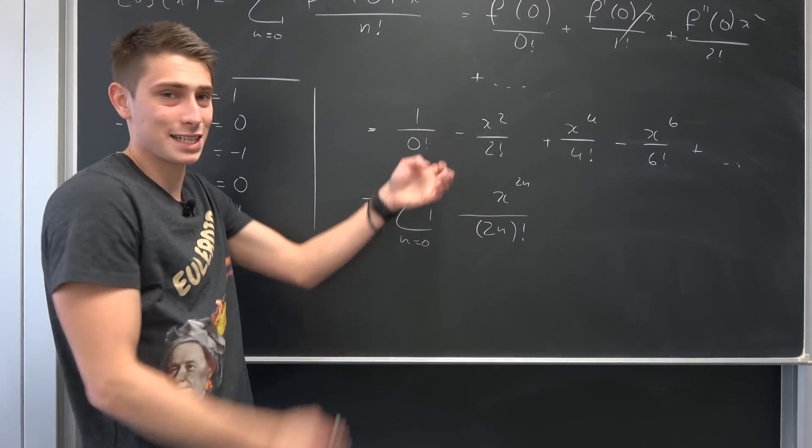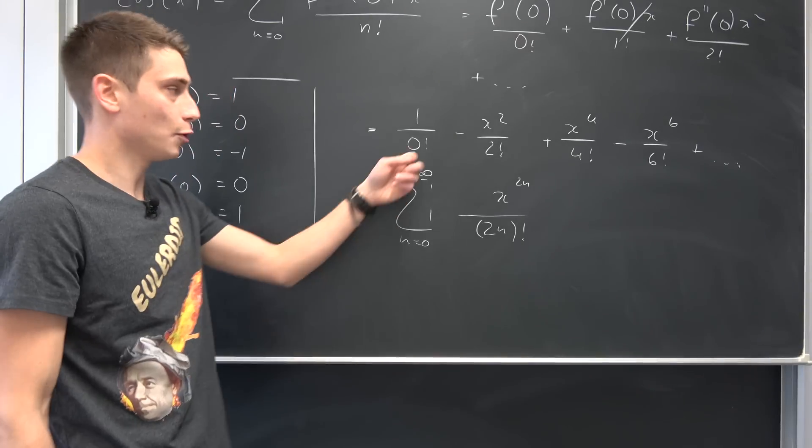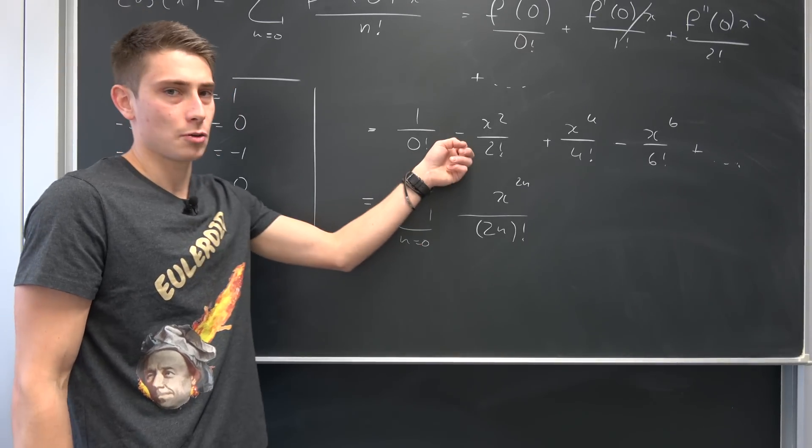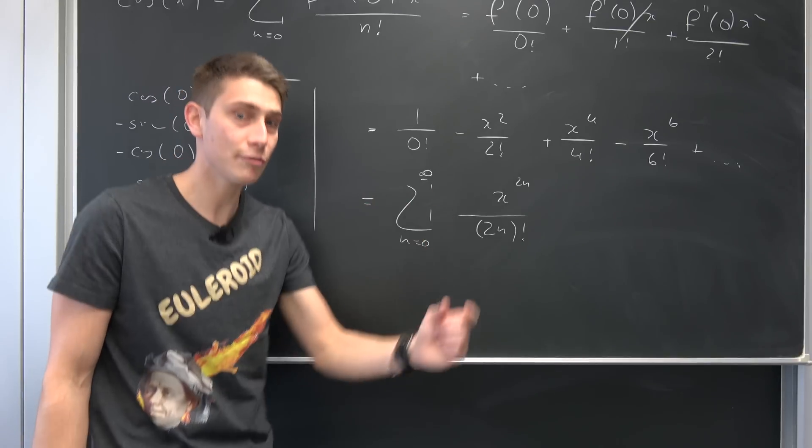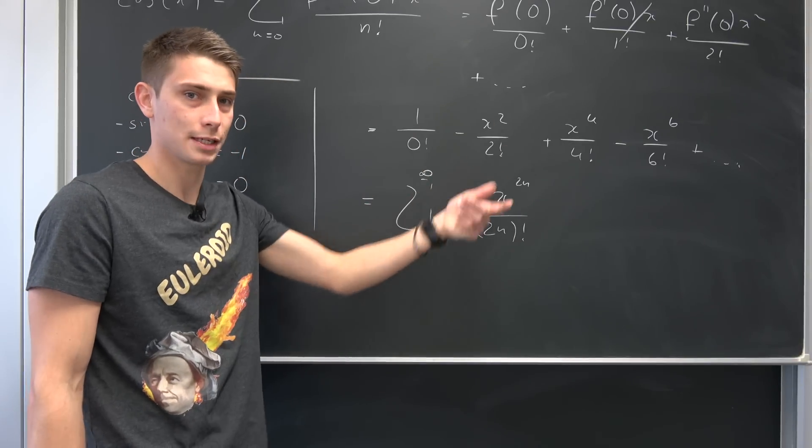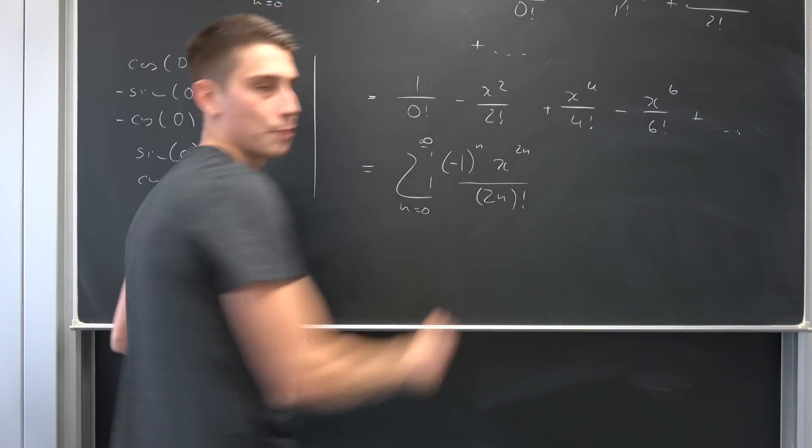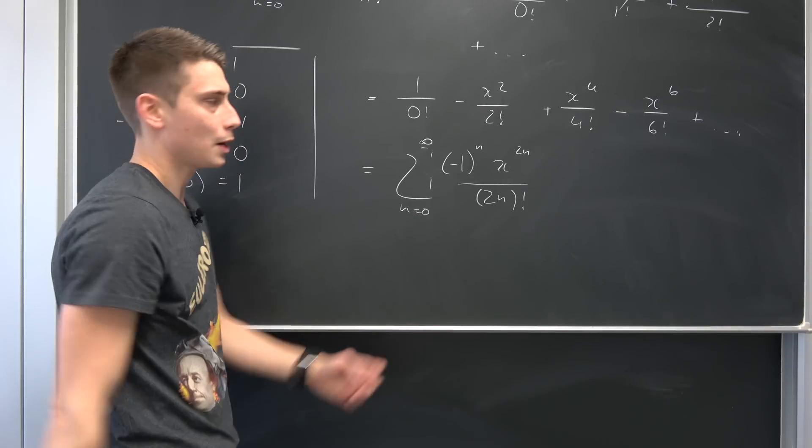But what do we have to put here? Because this right here is an alternating series. So on the first term it's positive. On the second term it's negative. On the third term it's positive. So on every even term it's going to be positive. Meaning we can just put negative one to the nth power here. So negative one to the zero power is just one.